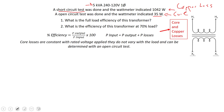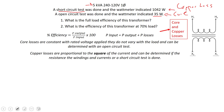Core losses are constant with rated voltage applied — they do not vary with the load and can be determined using the open circuit test. Copper losses, on the other hand, are proportional to the square of the current, and can be determined if the resistance of the windings and currents are known in both primary and secondary, or by doing a short circuit test for full load copper losses. Since P equals I squared R, if the current changes even a little, it has an exponential effect on the true power dissipated by each winding.